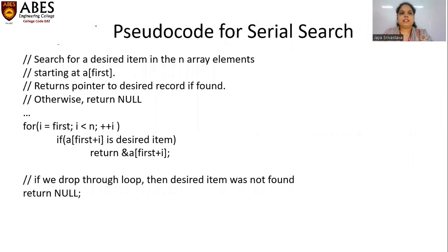The pseudocode for serial search: search for the desired item in the array elements starting at the first index. Return a pointer to the desired record if found; otherwise return null. For i equals zero, i less than n, i plus plus: if a[first + i] is the desired item, then return a[first + i]. If we drop through the loop, then the desired item was not found, so return null.